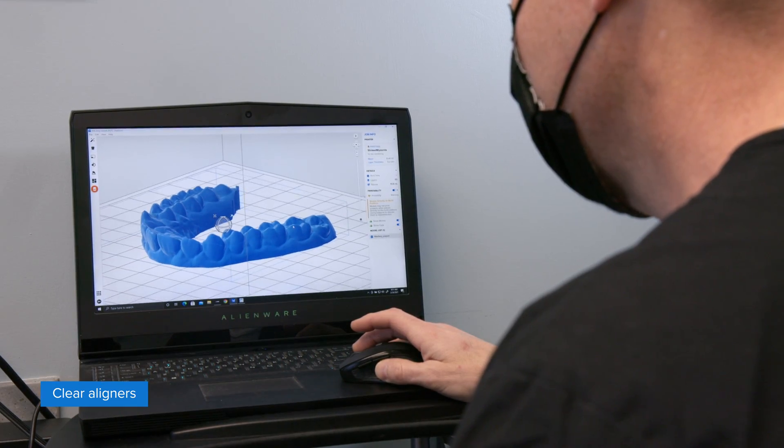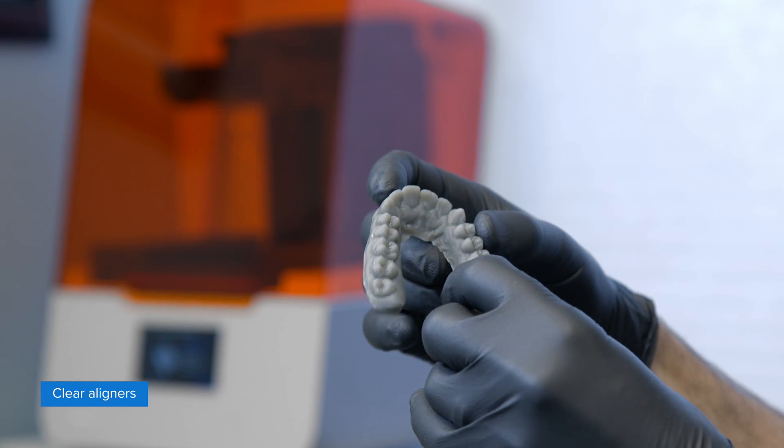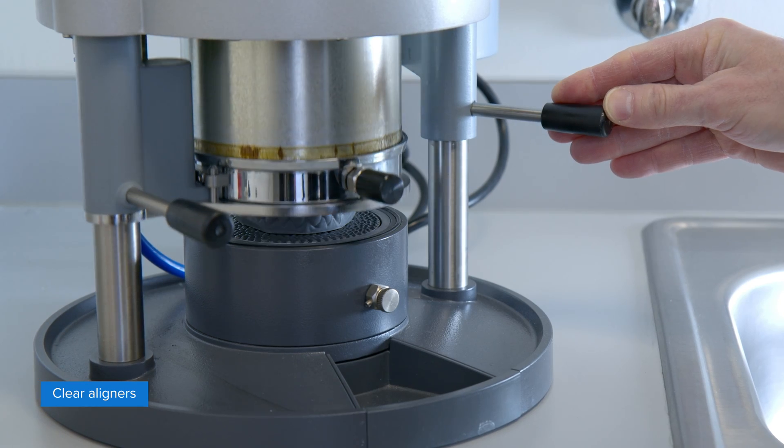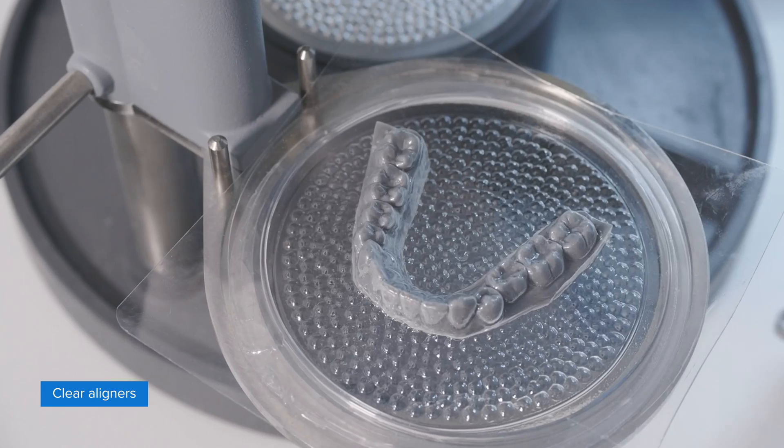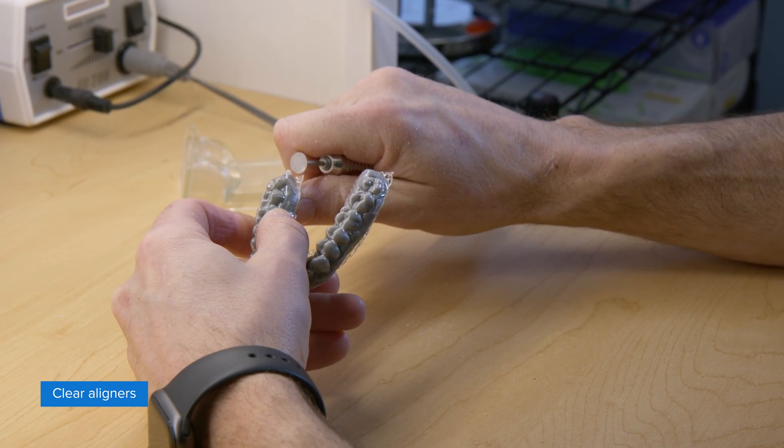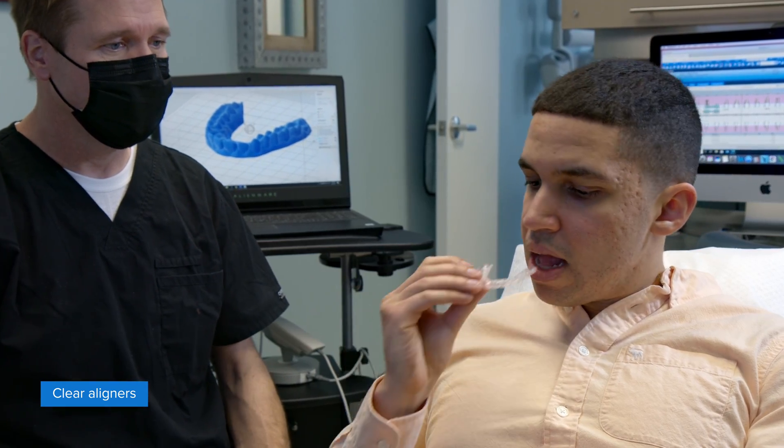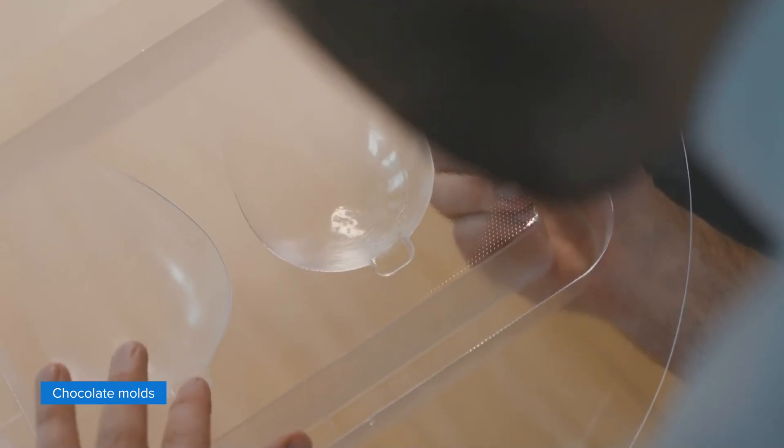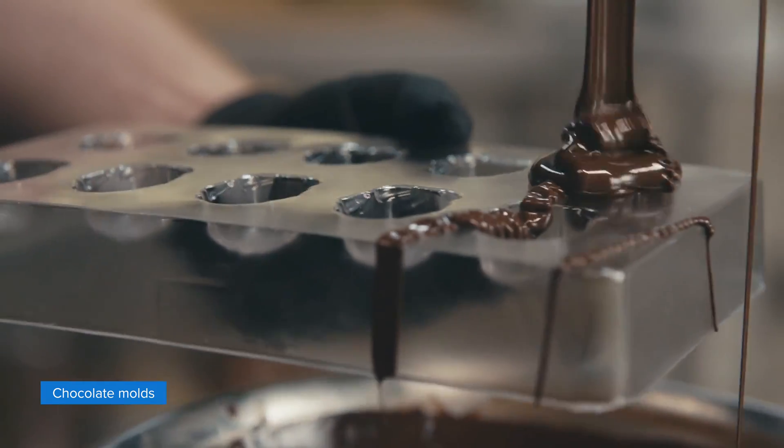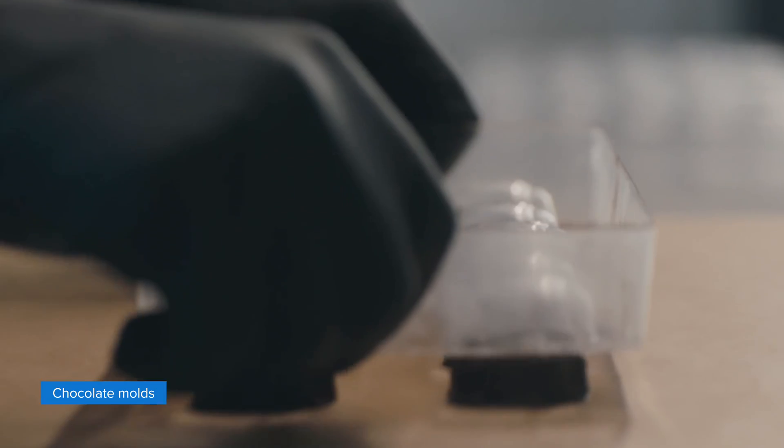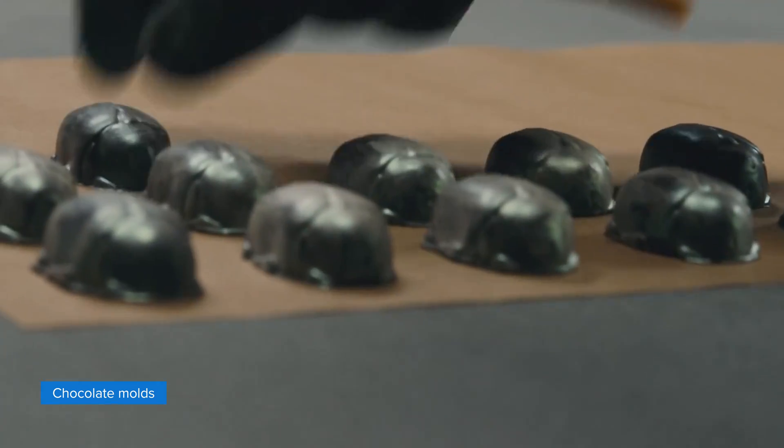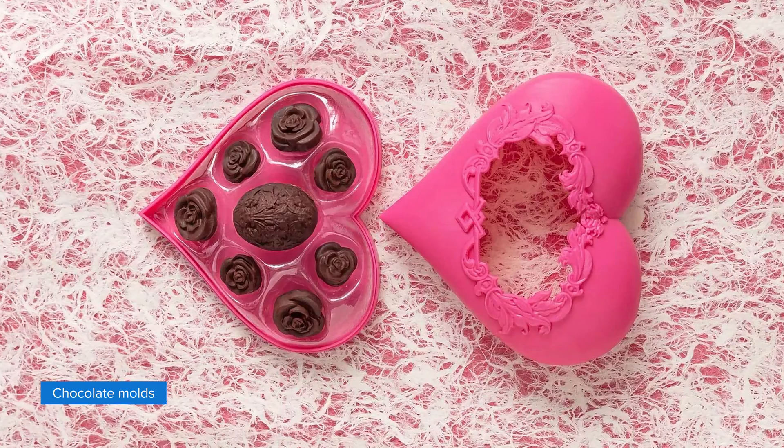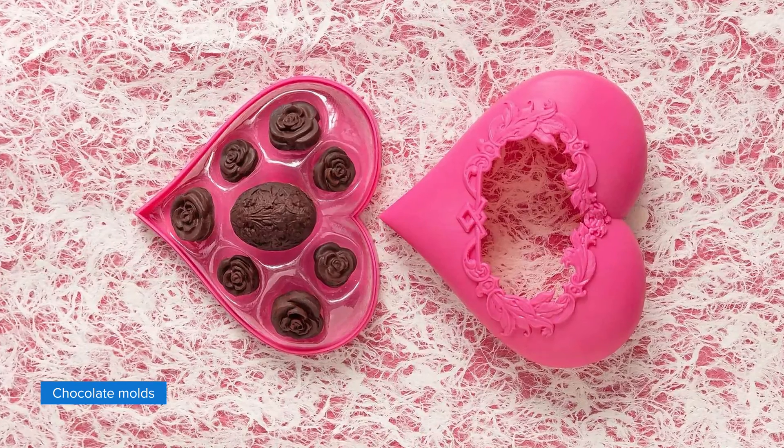3D printed thermoforming molds are also ideal for cost-effectively manufacturing custom parts. For example, vacuum forming over 3D printed models is the go-to method for producing clear aligners in orthodontics. Using 3D printed patterns to vacuum form food molds such as custom chocolate molds, it's also possible to add a level of detail and customization to sweet treats previously only available to skilled artisans.